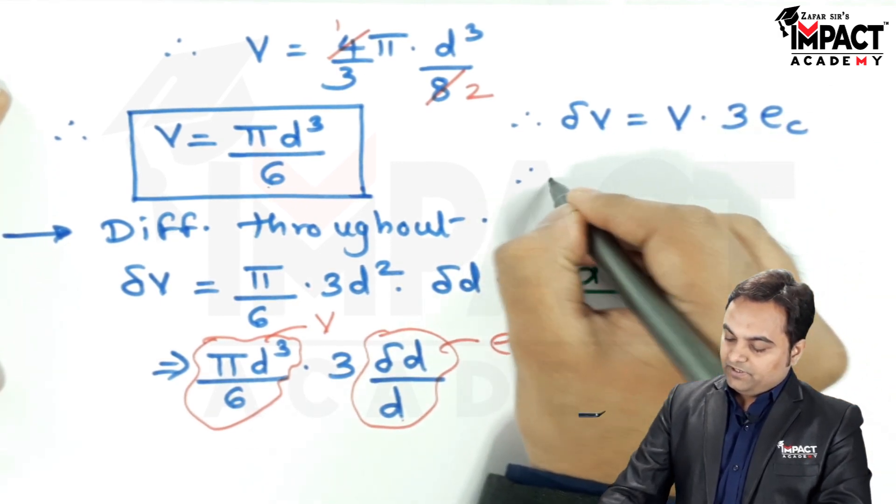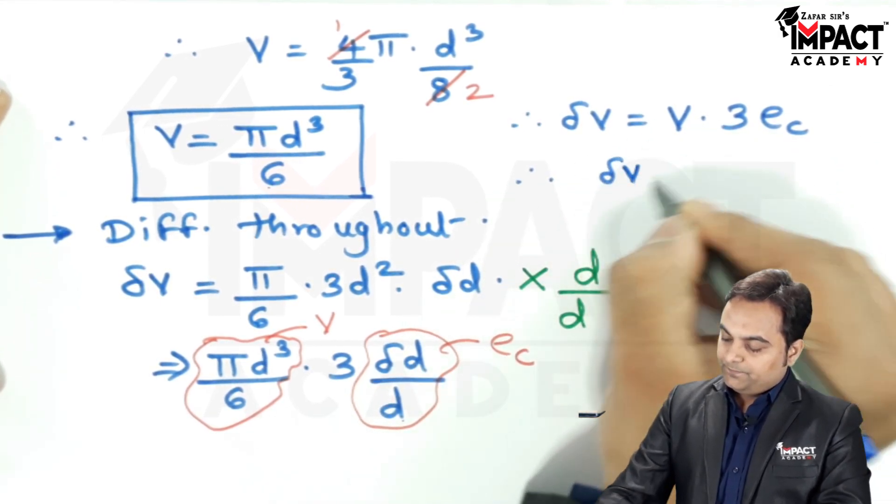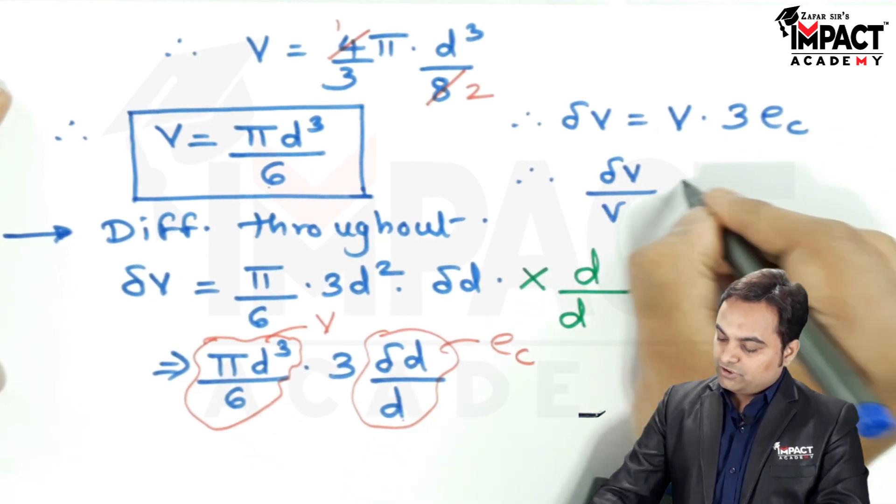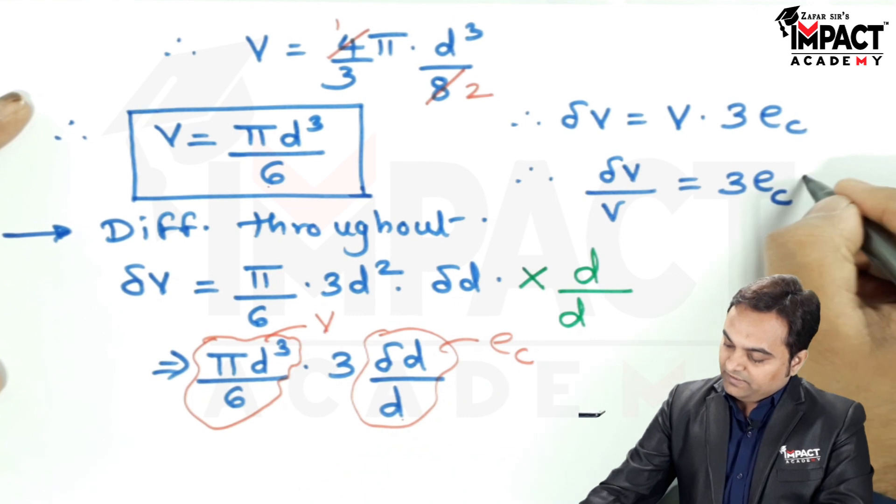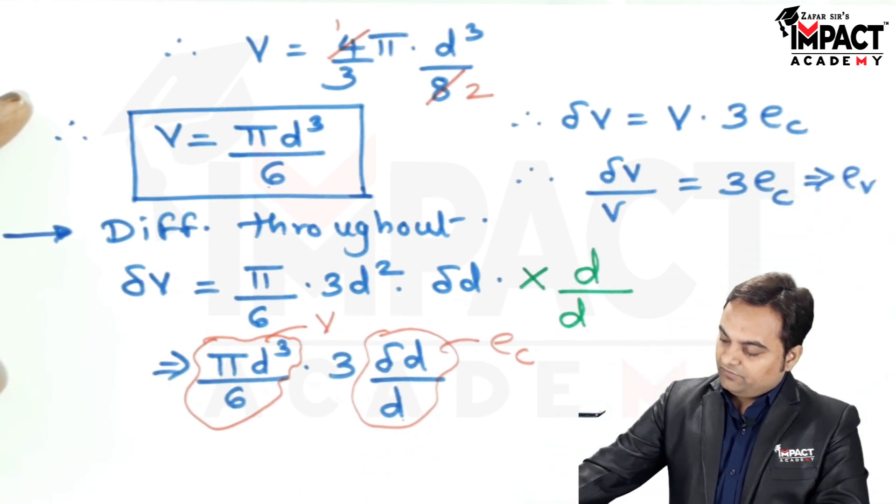So, therefore, when I bring this original volume on one side, change in volume upon original volume is equal to 3 times of E_c. And that is nothing but E_v, that is the volumetric strain.